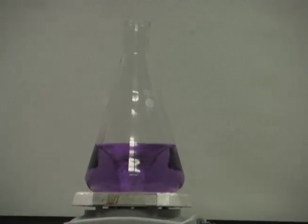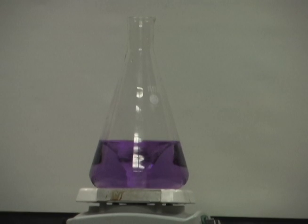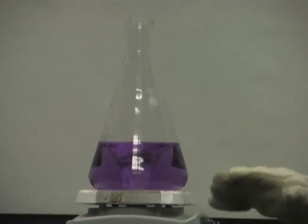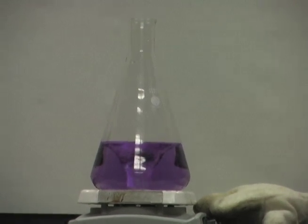So here we have a flask with some universal indicator, and we've used a stir plate to form a little tornado in it. We've added some base to make it basic.